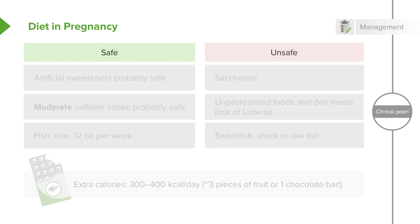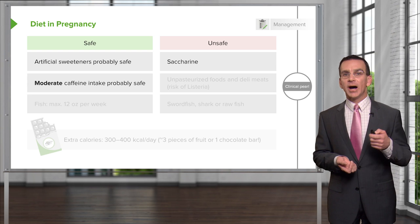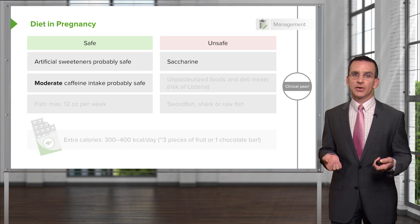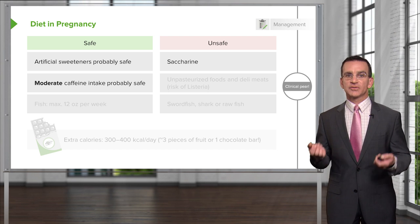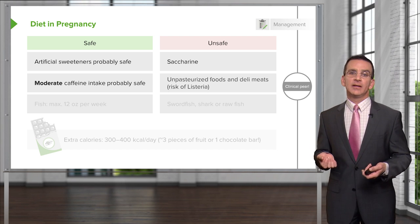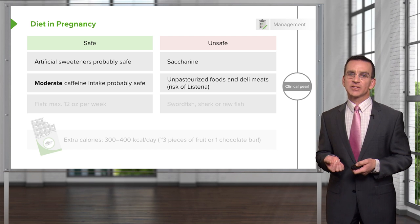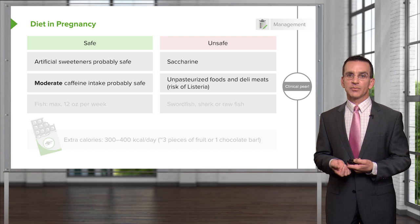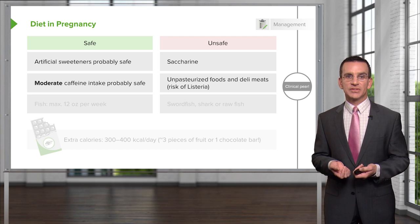Many women have questions about diet in pregnancy. Most artificial sweeteners are probably safe in moderation, but saccharin should be avoided during pregnancy. Moderate caffeine intake — one to two cups of coffee per day — is probably safe, but extreme intake is not healthy. Unpasteurized foods and deli meats should be avoided because of the risk of listeria and its potentially devastating effects on pregnancy.